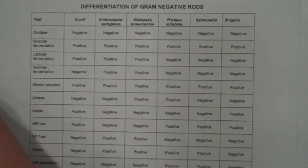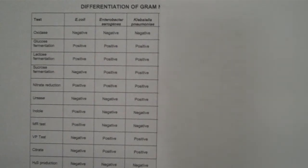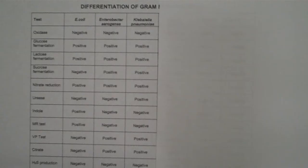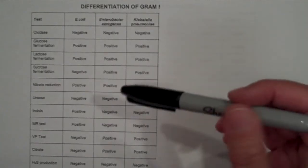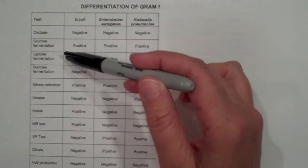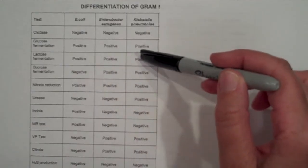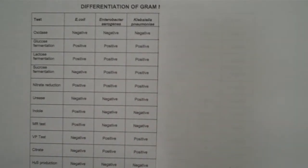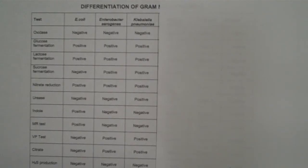Now what we need to do is start separating the bacteria. What I like to do is cover half of the bacteria that you're not separating just to make it easy. So I'm going to focus on just the three bacteria that are lactose fermentation positive and cover the three that are lactose fermentation negative. We need to find a test where these three lactose fermentation positive bacteria don't all test the same, because the goal is to start separating them from each other.